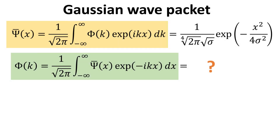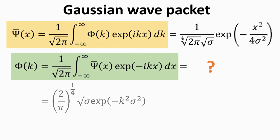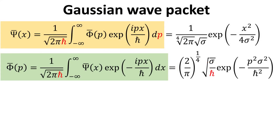The function phi(k) can then be obtained via an inverse Fourier transformation as given in the green box. Since psi-bar is just a Gaussian function, its Fourier transform is well known. We leave it as an exercise for you to show that phi(k) is also a Gaussian function as shown. Recall that the wave vector k is related to the particle momentum p by the de Broglie relation, p equals h-bar times k. It is sometimes convenient to express our reciprocal wave functions as a function of p, giving us the wave function pair psi-bar as a function of x and phi-bar as a function of p.